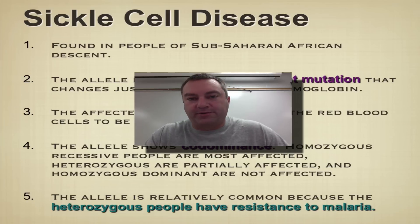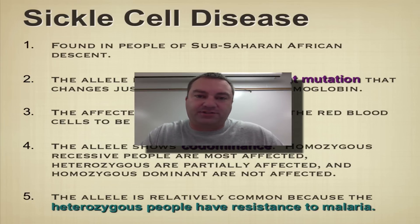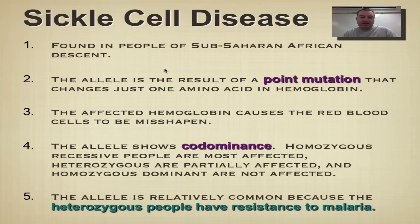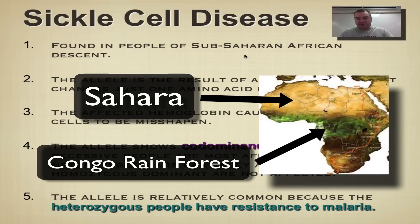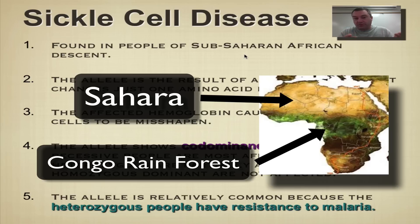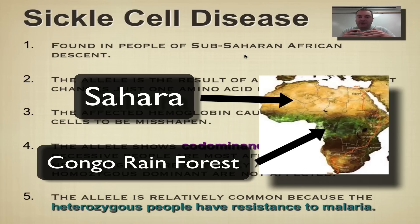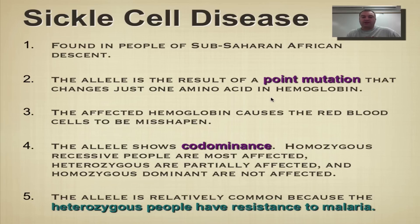Welcome to episode number six from chapter 14. In this episode we're going to cover sickle cell disease. Sickle cell disease is a genetic disorder that is found in people of sub-Saharan African descent. The Sahara Desert is the northern part of Africa, and the lower two-thirds has rainforests and savannas. People who live or are born in that area can have sickle cell disease running through their family tree.